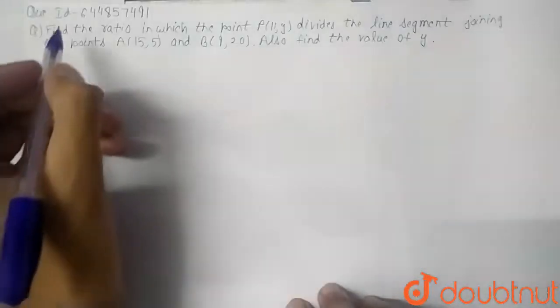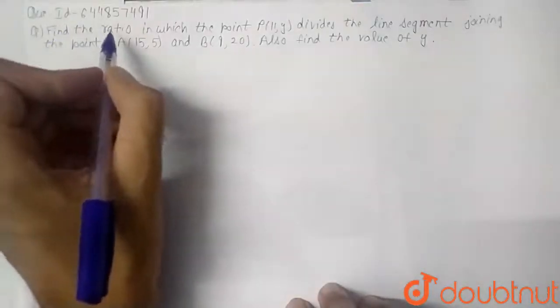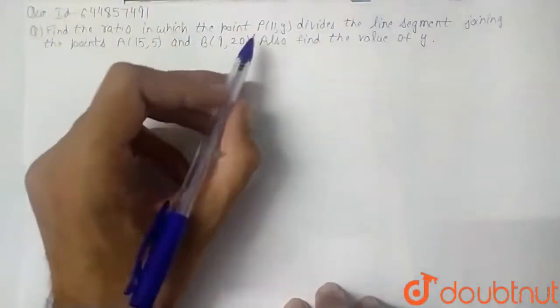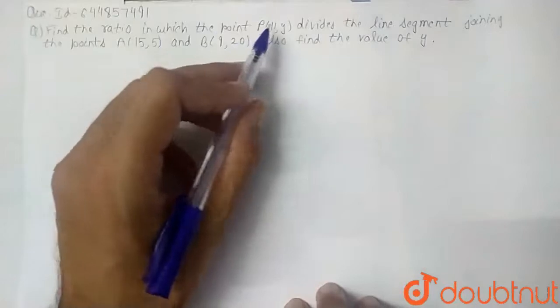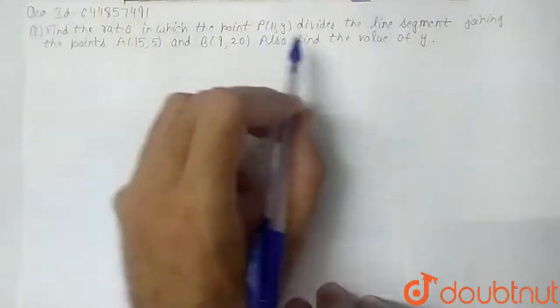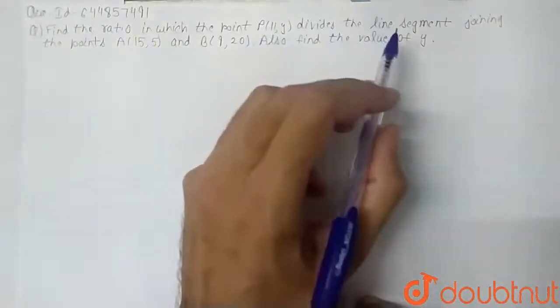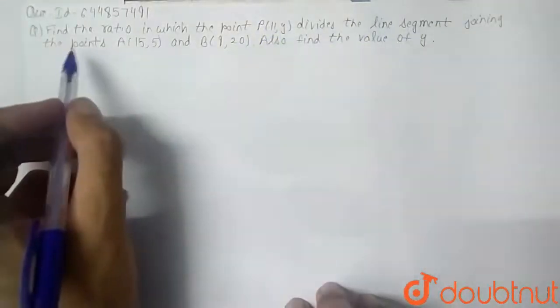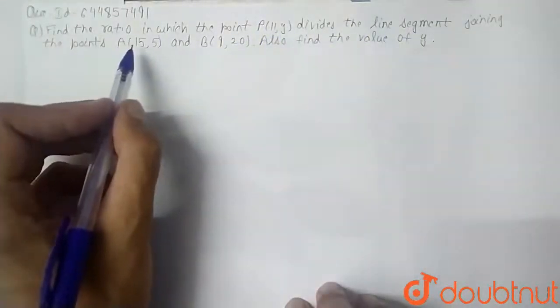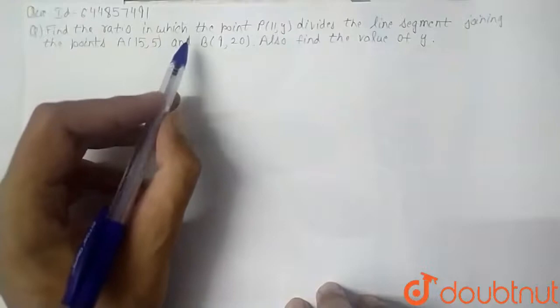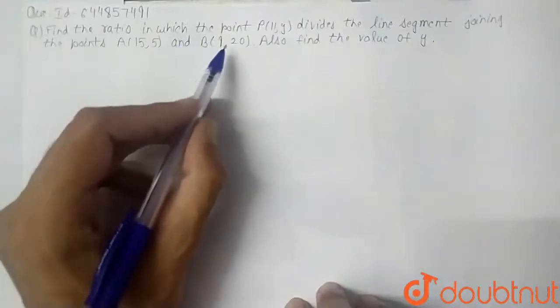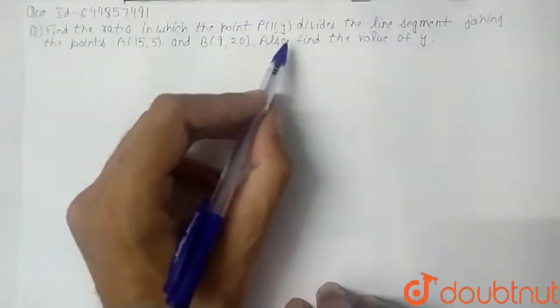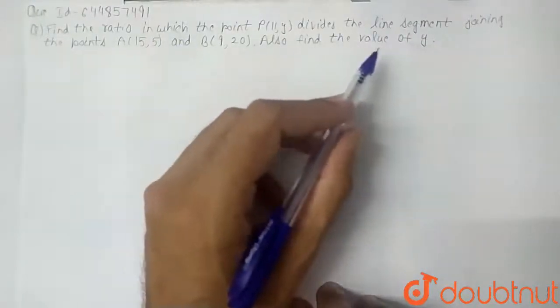Today's question is: find the ratio in which the point P divides the line segment joining the points A(15, 5) and B(9, 20). Also find the value of y.